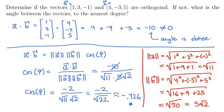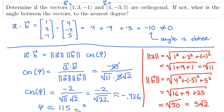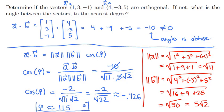So cosine of phi is approximately negative 0.426. Using my calculator's cosine inverse button, phi is approximately 115.2 degrees. Of course, we just wanted it to the nearest degree, so we have phi is approximately 115 degrees.